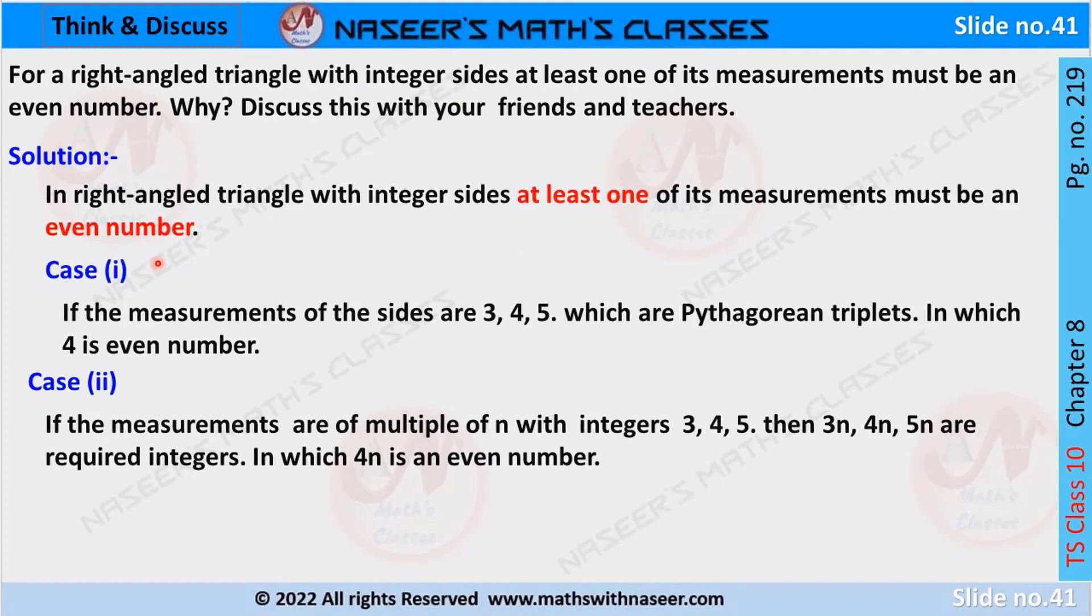There are three possible cases. In the first case, if the measurements of the sides are 3, 4, 5, which are Pythagorean triplets, in which 4 is an even number.